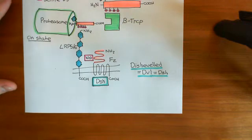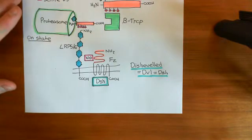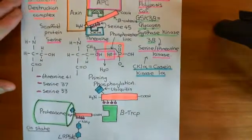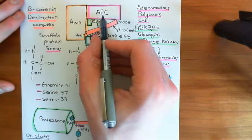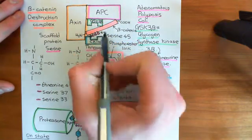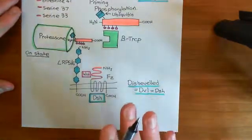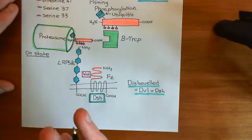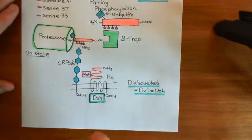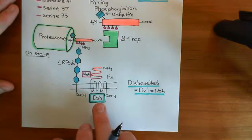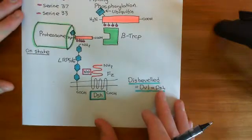So once the frizzled receptor has bound its Wnt, it now gets the protein dishevelled bound to it. What's going to happen next is that dishevelled is going to bind to components of the beta-catenin destruction complex. Remember, the beta-catenin destruction complex consisted of an axin protein, an APC protein, a glycogen synthase kinase-3-beta enzyme, and a casein kinase-1-alpha enzyme. The basic idea is we're going to inactivate the beta-catenin destruction complexes by binding their components to the dishevelled protein, so those components will no longer be able to form a functional destruction complex.